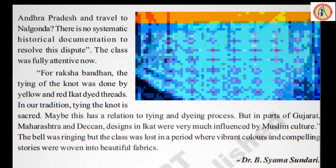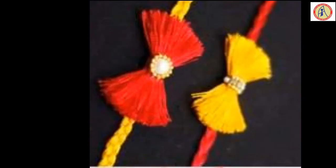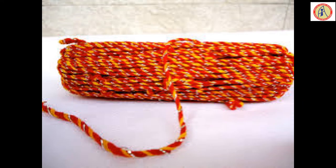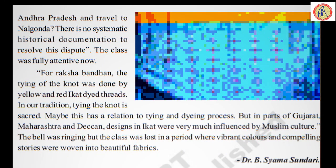For Raksha Bandhan, the tying of the knot was done by yellow and red ikat-dyed threads. You will observe these threads not only on the rumals or sarees. During Raksha Bandhan the children buy these rakis; the threads used are different colors — yellow and red. In our tradition, tying the knot is very sacred, and maybe this has a relation to the tying and dyeing process. But in parts of Gujarat, Maharashtra and Deccan, the designs in Ikat were very much influenced by Muslim culture.